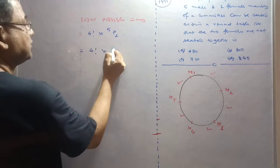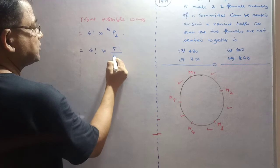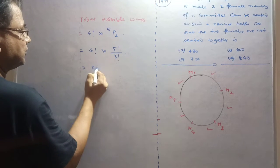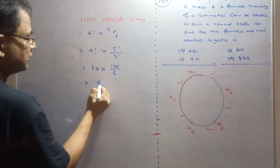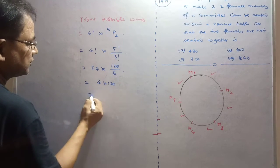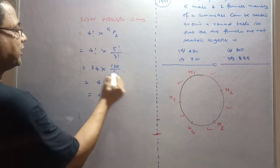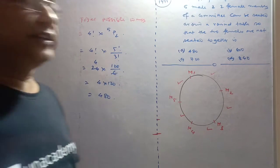And this is 5 factorial divided by (5 minus 2) equals 3 factorial. So this is 24, and this is 120 by 6. So this is 4 into 120, which equals 480.